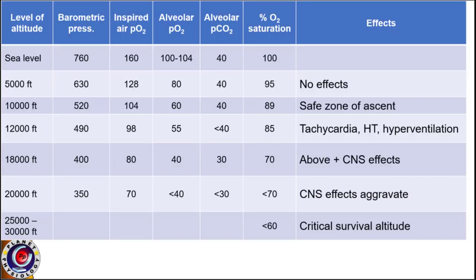A summary table indicates changes in various parameters with increase in altitude. Till 5,000 feet, oxygen saturation is high with no effects on the body. Between 5,000 to 10,000 feet is a safe zone as physiological compensatory mechanisms maintain saturation. Above 12,000 feet, saturation drops to 85% with tachycardia, hypertension and hyperventilation. At about 18,000 feet as saturation falls to 70%, CNS effects start appearing, aggravated further at 20,000 feet. From 25,000 to 30,000 feet is the critical survival altitude or death zone.